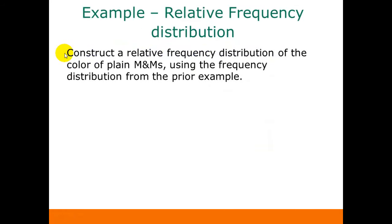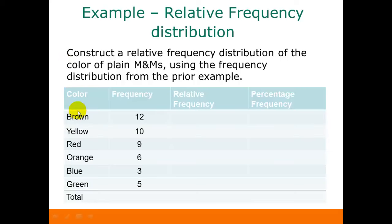Here's an example of creating a relative frequency distribution. We're going to construct a relative frequency distribution of the color of plain M&Ms using the frequency distribution we already had from the prior example. Here was the information from tallying up the M&Ms of each color. To find our relative frequencies, we need the total of all the frequencies — in other words, the total number of M&Ms in the bag. If we add up all the frequencies, we get 45. So there were 45 M&Ms in the bag. To get our relative frequencies, we take each category frequency and divide it by the total, which is 45.